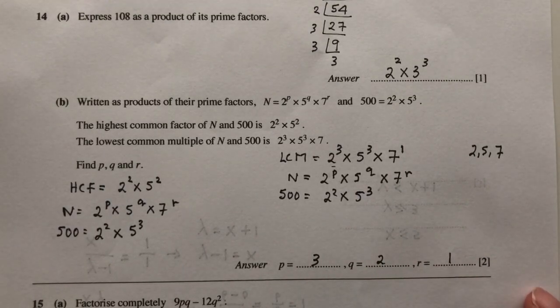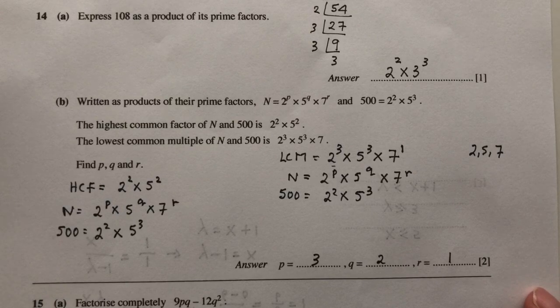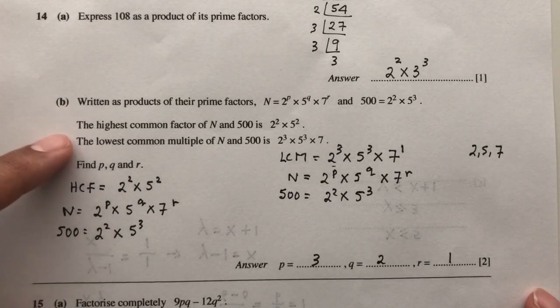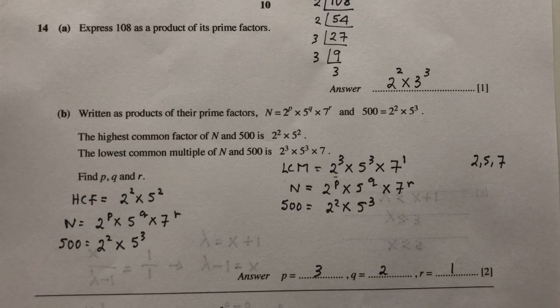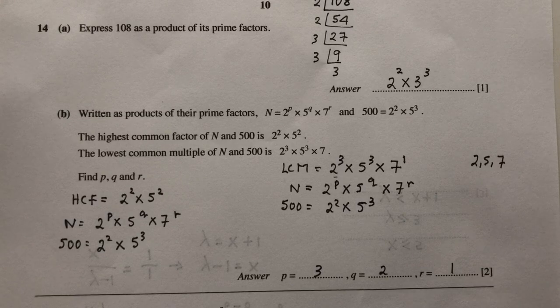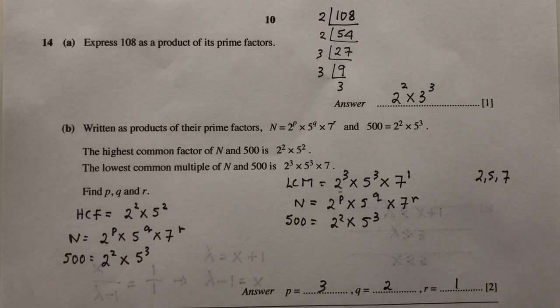So that's how you obtain your answers 3, 2, 1 for the values of P, Q, and R by using those two information. So I hope that was somewhat helpful. As always, if you guys have any other questions, leave me a comment below. I'll get back to you guys as soon as possible. And thank you for watching, I will see you soon.